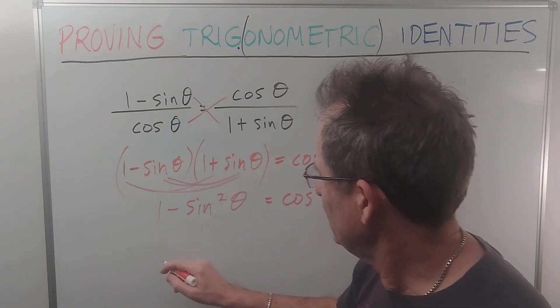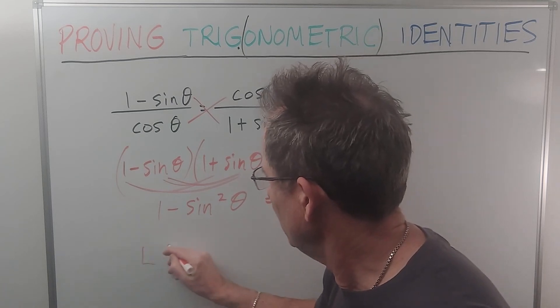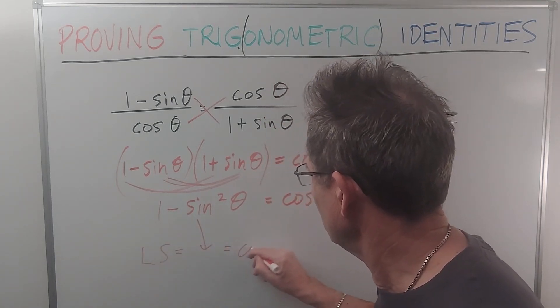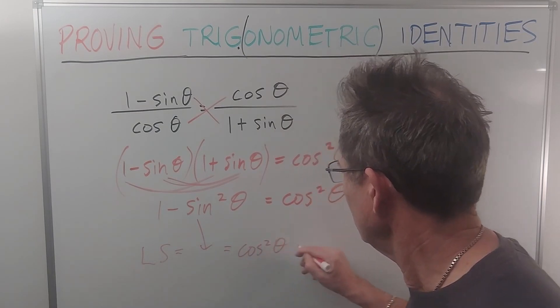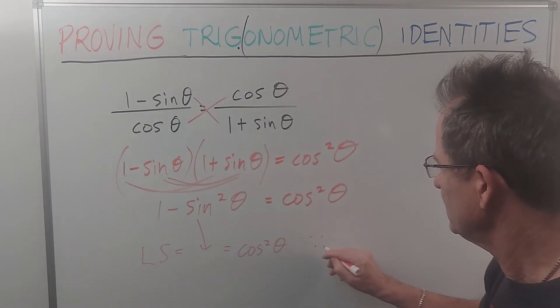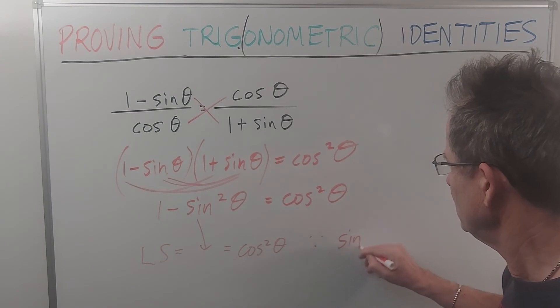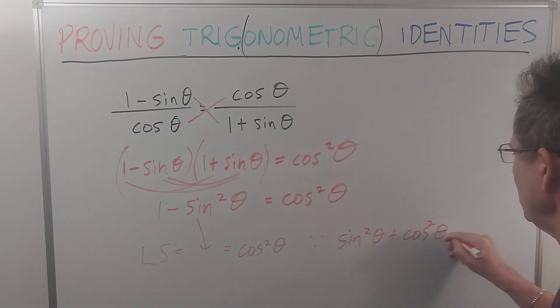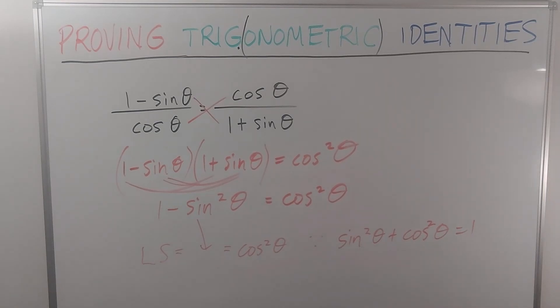And then if I want to prove that's true, the left hand side, which is that, is equal to cos squared theta. Because, or since, sine squared theta plus cos squared theta equals 1. So if I bring the sine squared theta over here, it becomes negative.